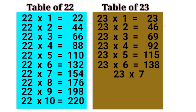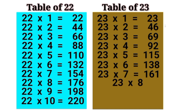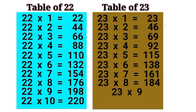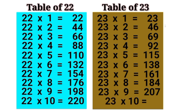23 7 is 161, 23 8 is 184, 23 9 is 207, 23 10 is 230.